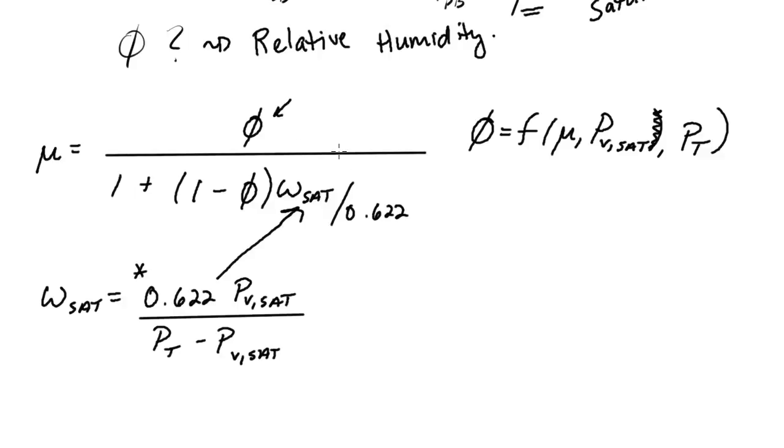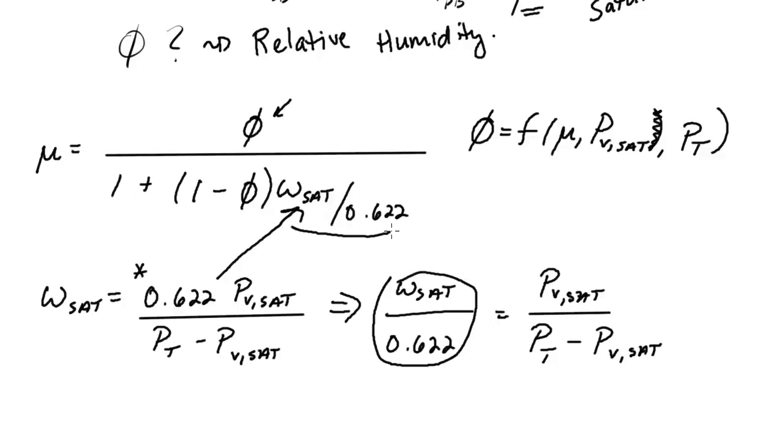Now, this is a little convoluted on the algebra, and if you look in the fundamentals, it's not exactly clear how to do this. So I'll actually work through this step by step so you can see where that final formula in the ASHRAE fundamentals comes from. If I divide this equation both sides by 0.622, I would get omega saturation over 0.622 equals partial pressure of the vapor at saturation divided by total pressure minus PV sat. So we have this fraction here that's the same fraction we have here, so we can replace this with this term.